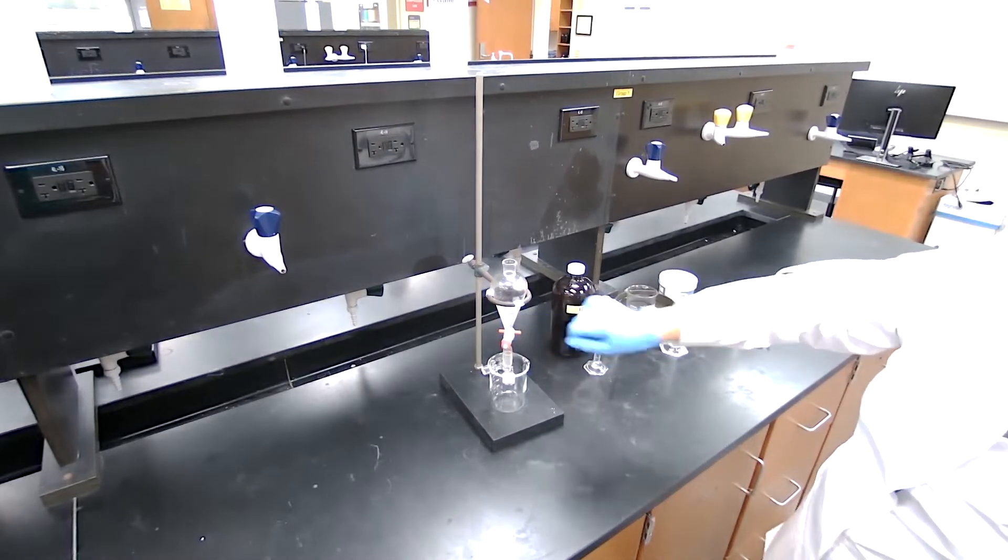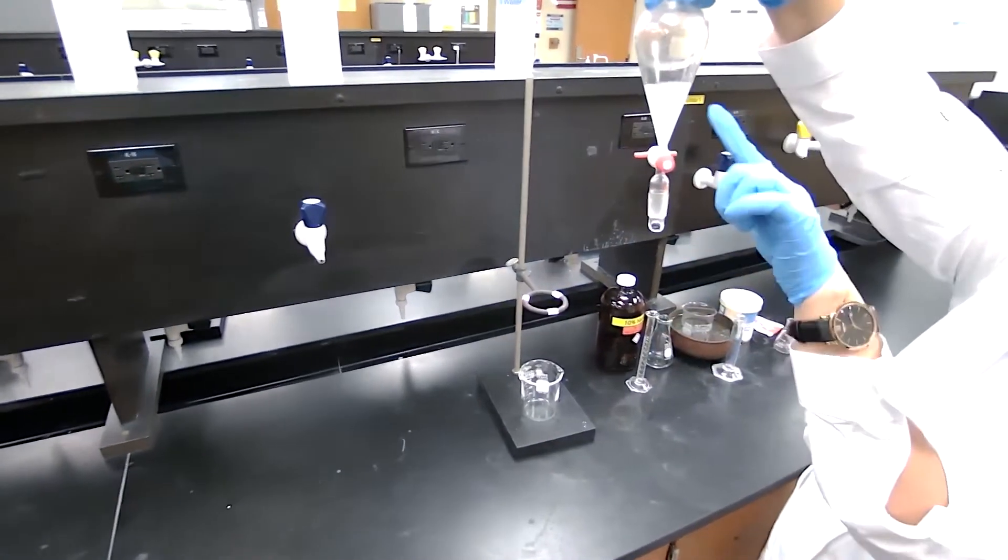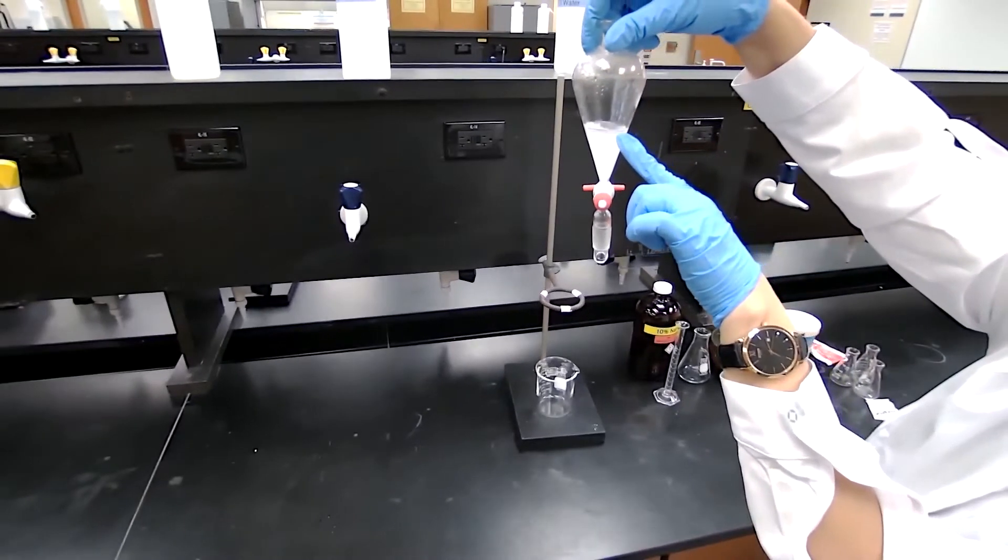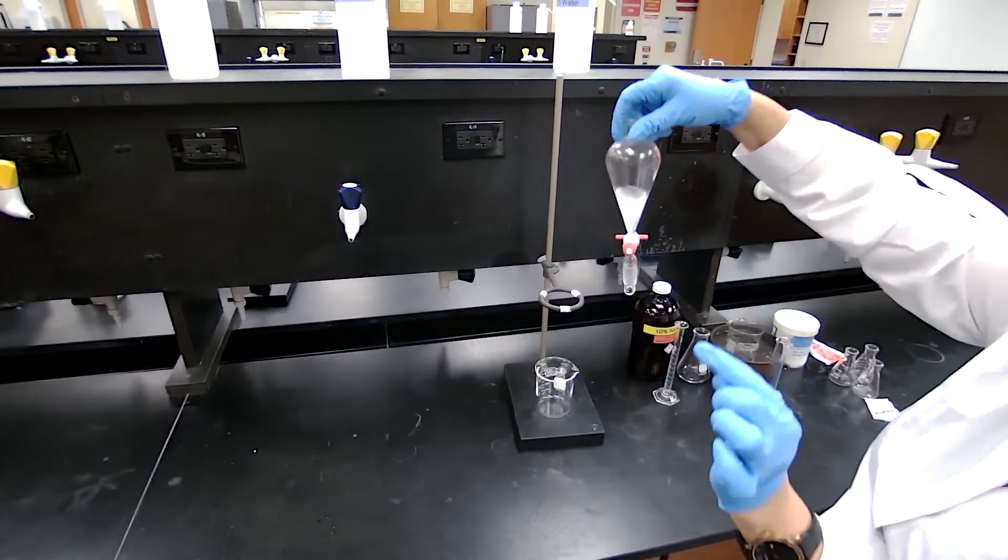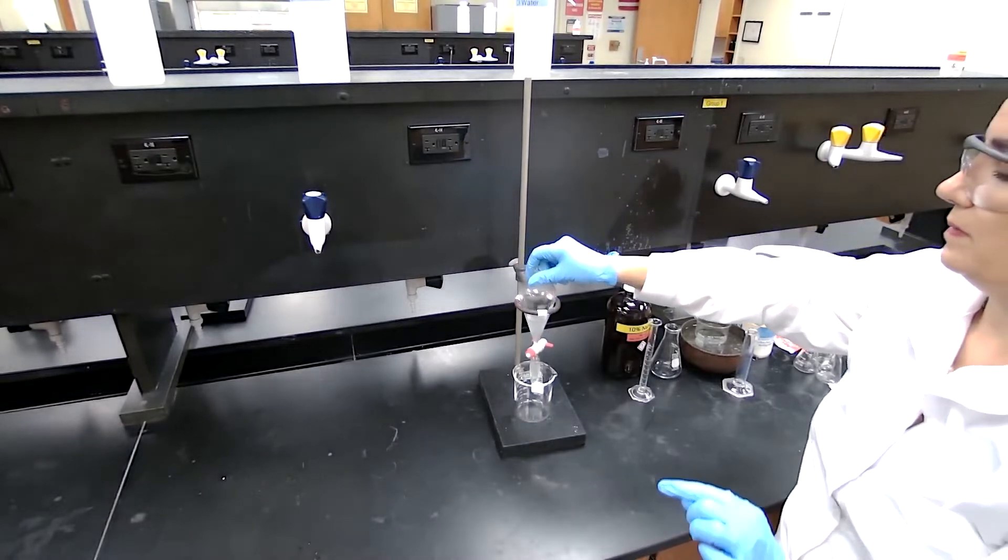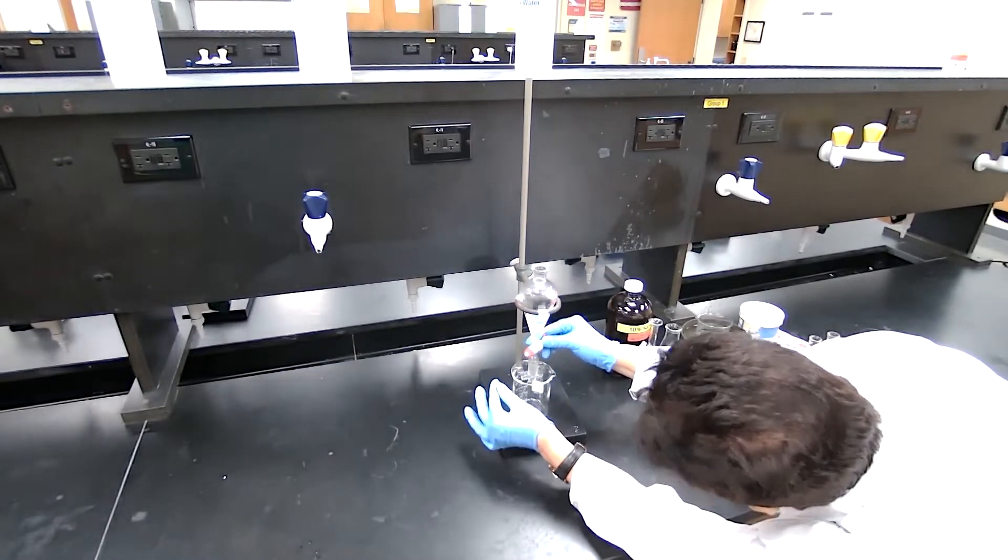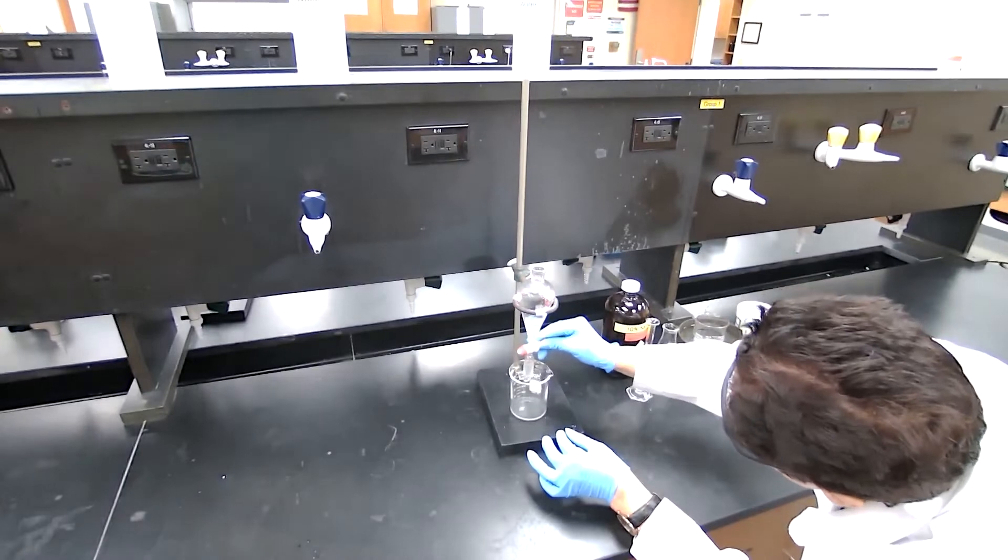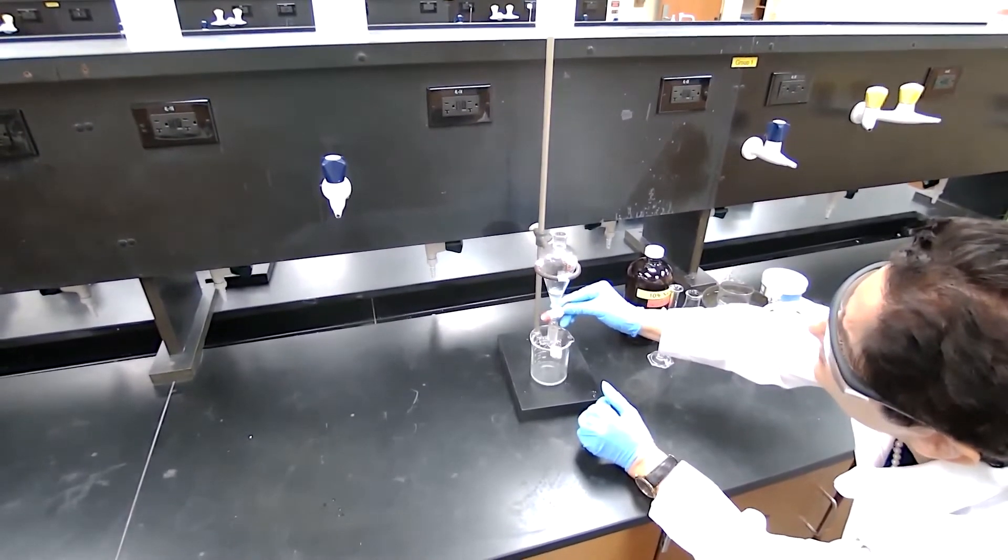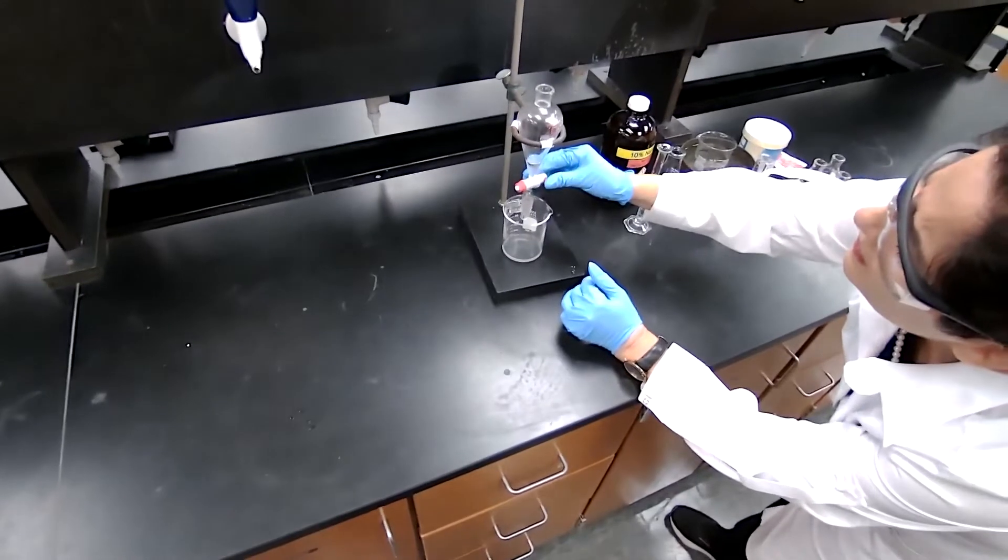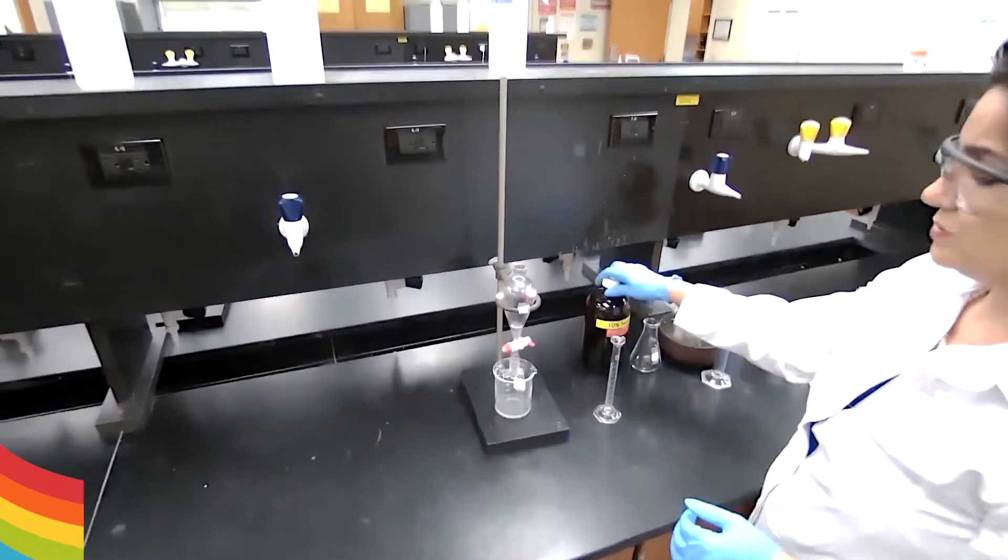Layers are separated, but I am just giving more time to make it more visible. See that there is like a ring up here, clear ring. That is the organic layer and the cloudy layer is the aqueous layer. Separating the lower layer, collecting it in a beaker.